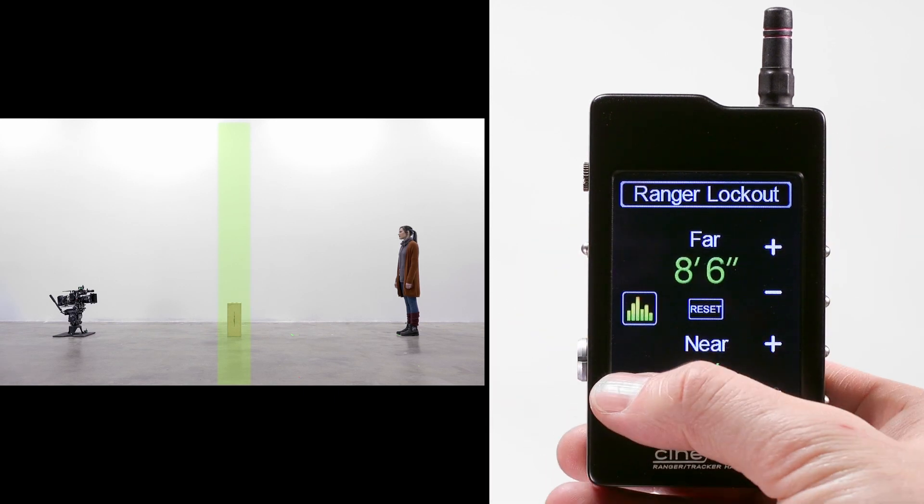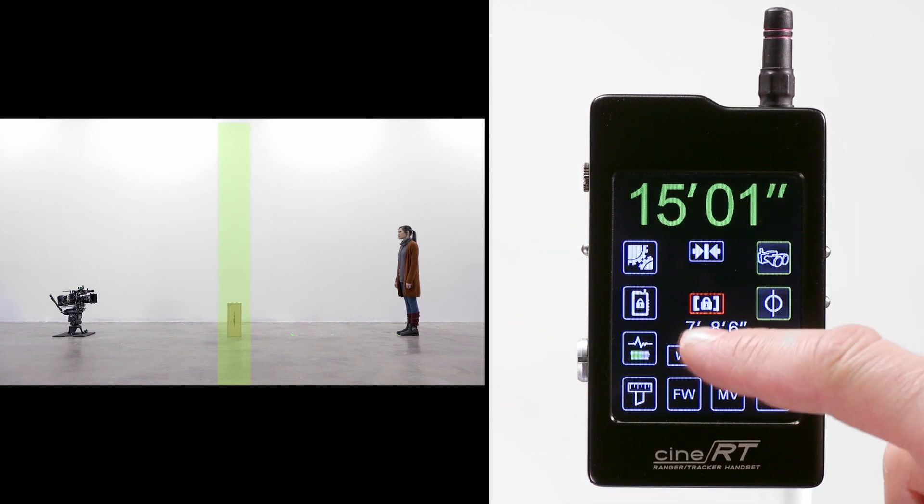When we back out to the rangefinder page, we now have good readings for our subject on the far side of the AppleBox.